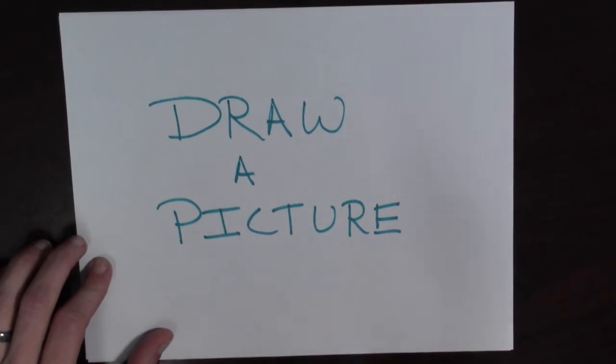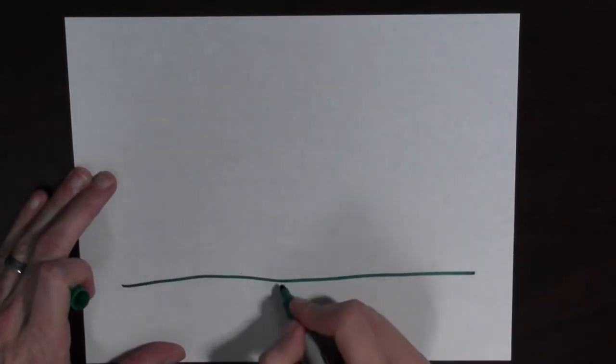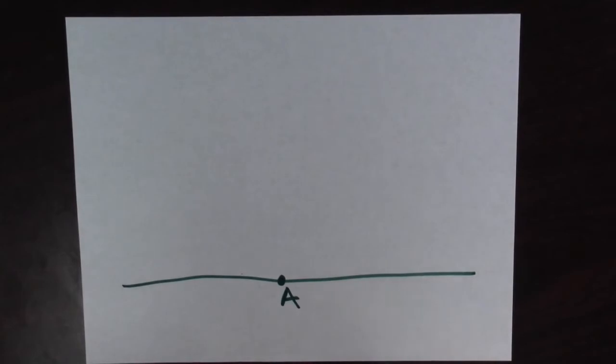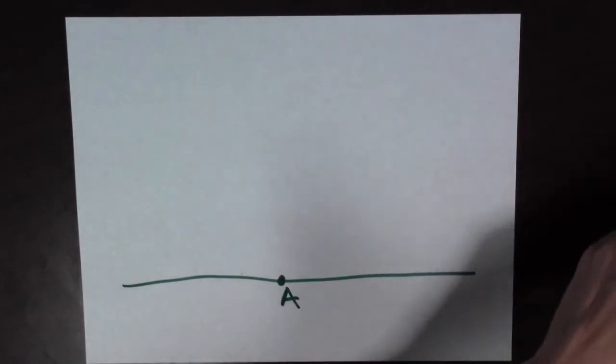Alright, so we have our problem and now we have to draw a picture. So we have the shore here. Oh, the shore is supposed to be straight. Well, that's straight enough I guess. Here's point A...